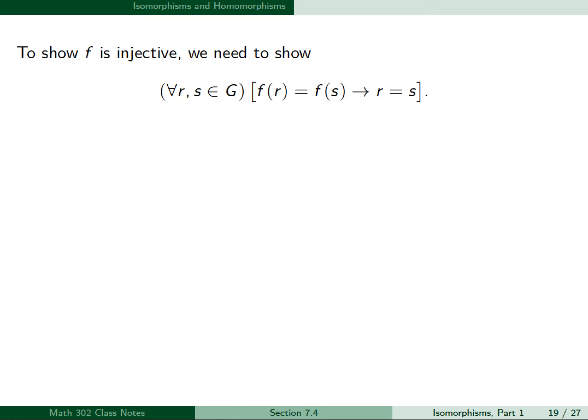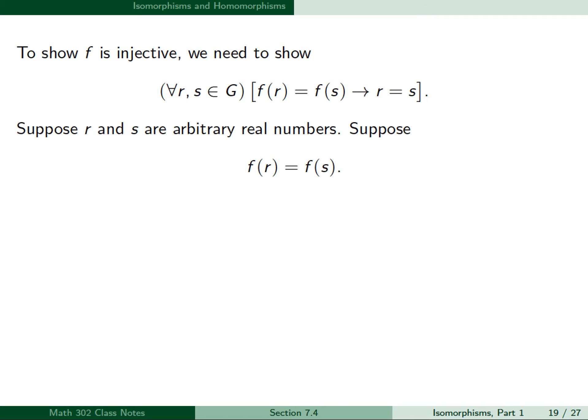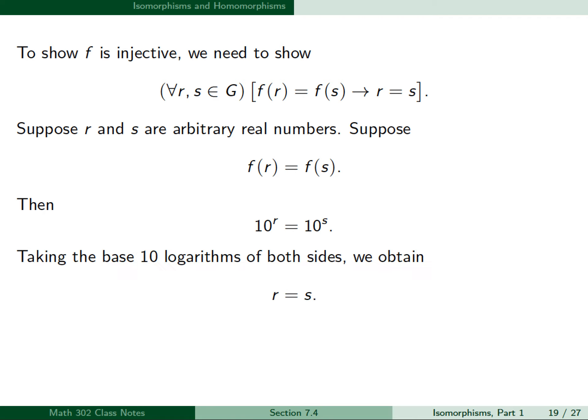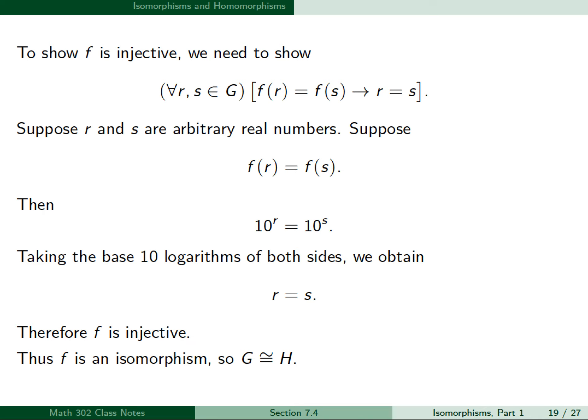To show f is injective, we need to show that for all r, s in G, f(r) = f(s) implies r = s. Suppose r and s are arbitrary real numbers, and suppose f(r) = f(s). Then 10^r = 10^s, and taking base-10 logarithms of both sides, we obtain r = s. Therefore f is injective, and thus f is an isomorphism, so G is isomorphic to H.